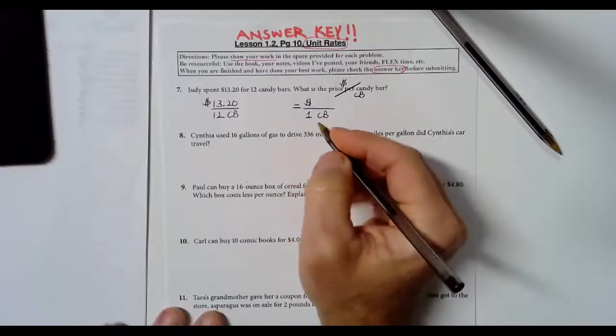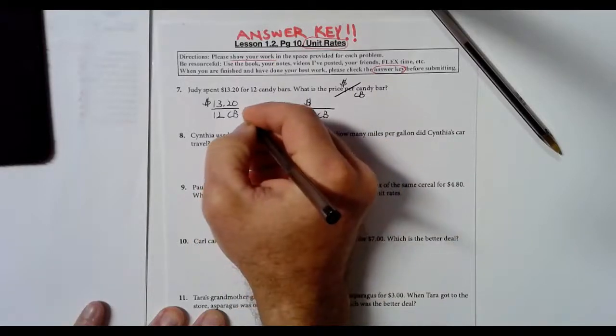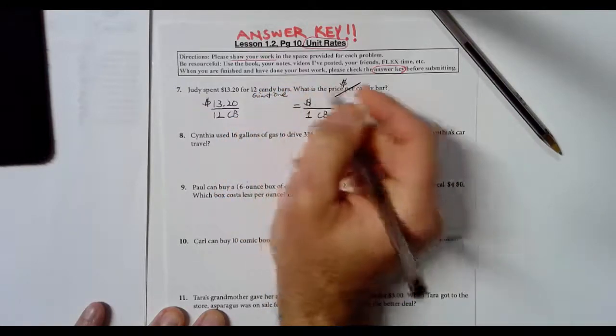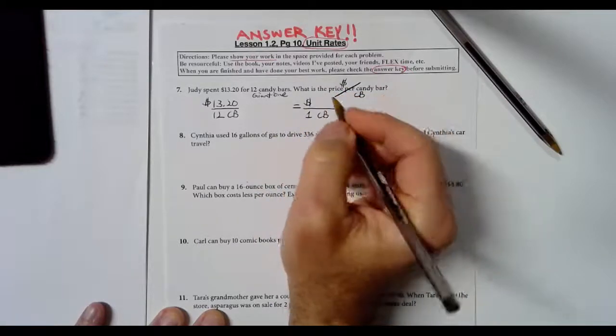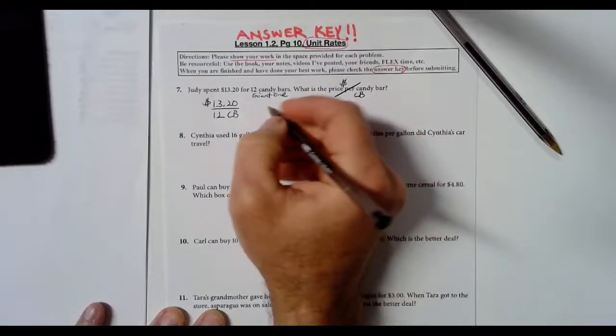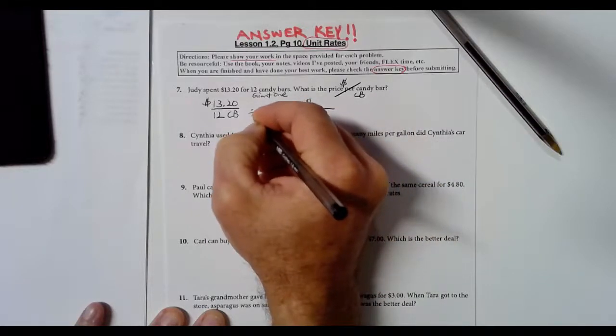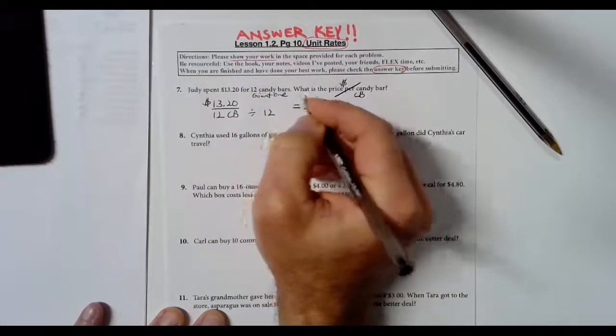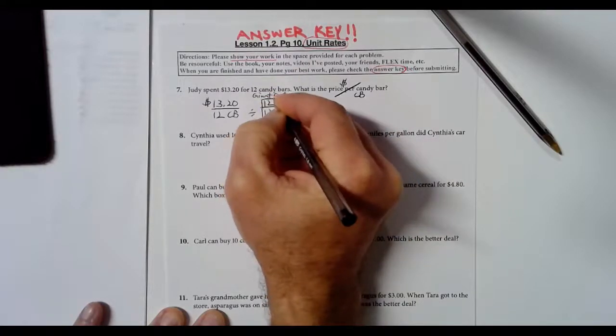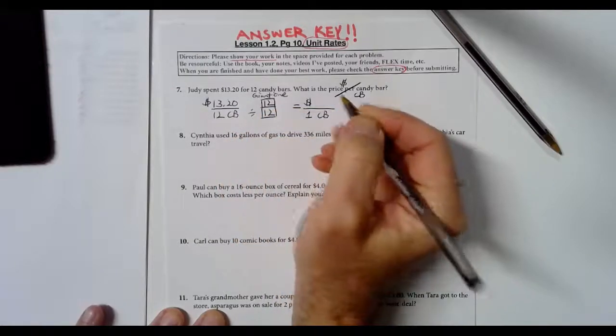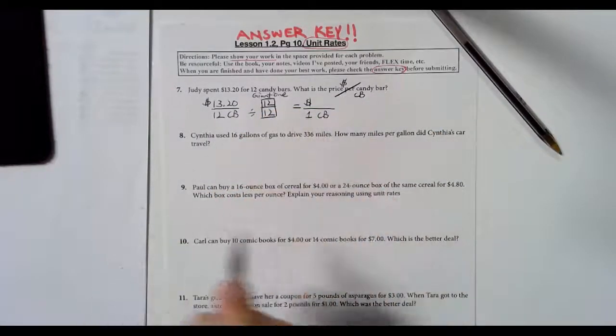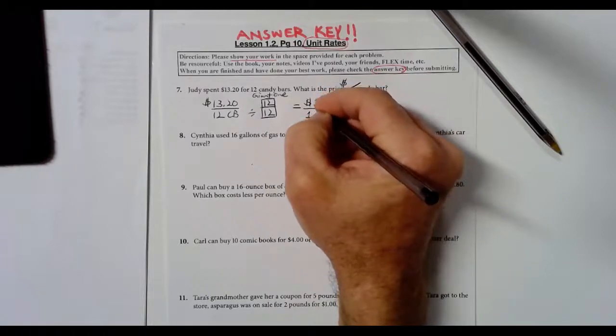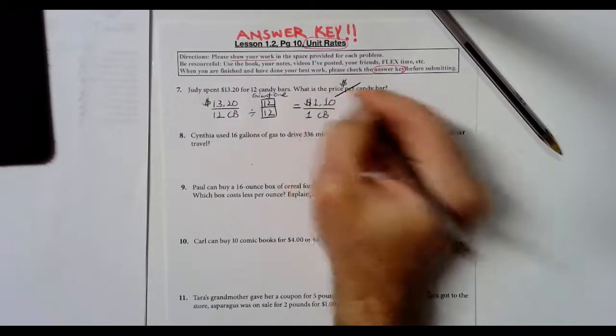We're going to have this come out to be price unit rate for one candy bar. That's called a unit rate, there's a one in the denominator. To get from 12 to one, I'm going to use a giant one strategy. We're going to divide top and bottom by the denominator of what we're given, which allows us to get a unit rate. Giant one is simply a fraction with the same number in the numerator and denominator.